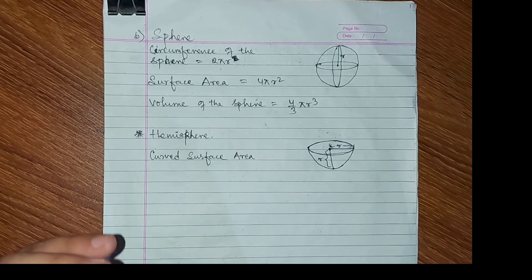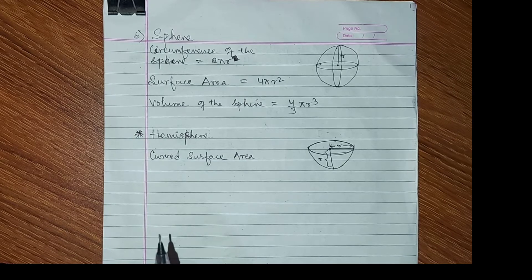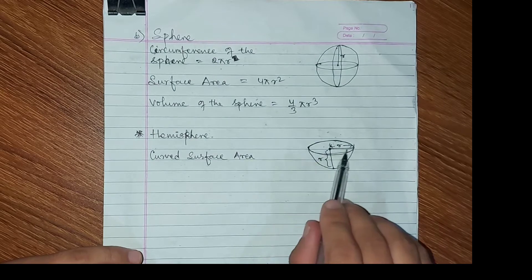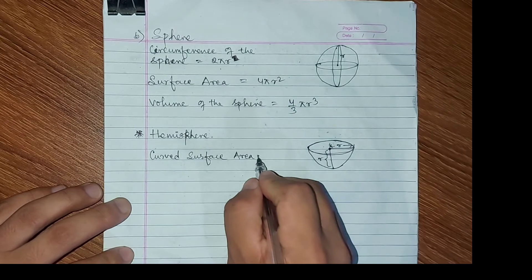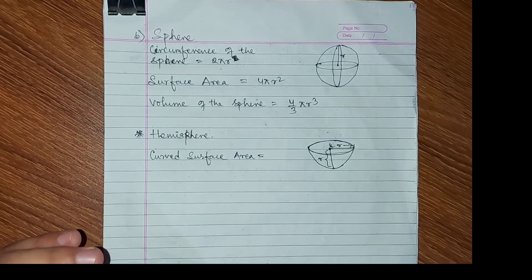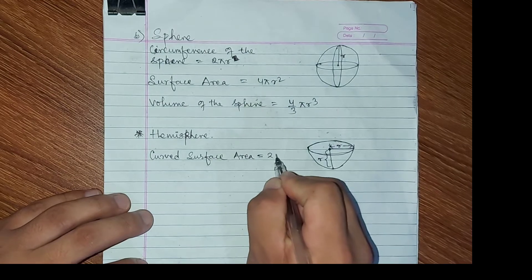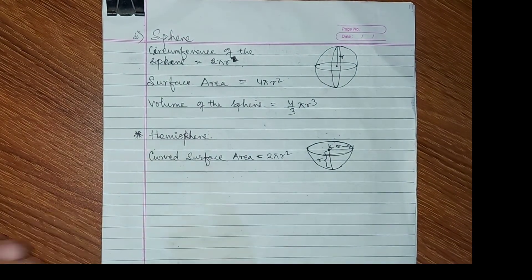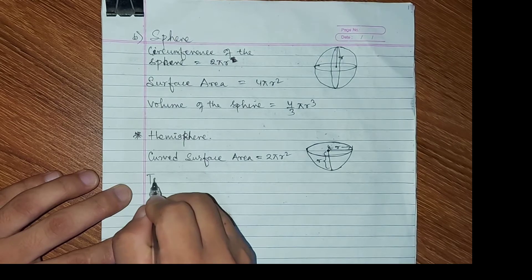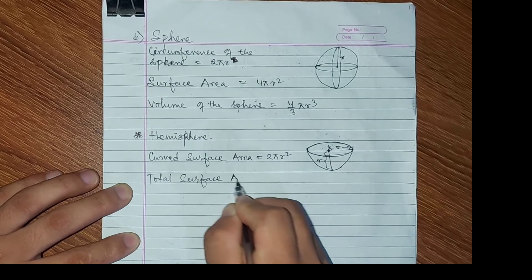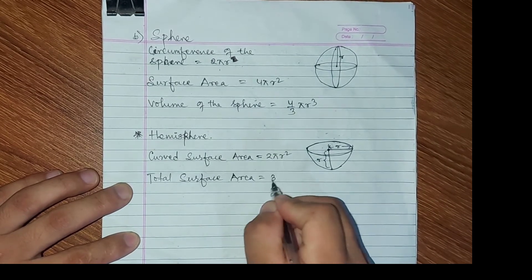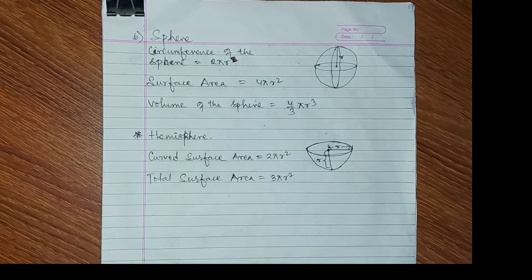This is the curved surface area. For the hemisphere, the top portion is hollow, so we calculate the curved surface area for that hollow back portion. The curved surface area of a hemisphere is 2πr².